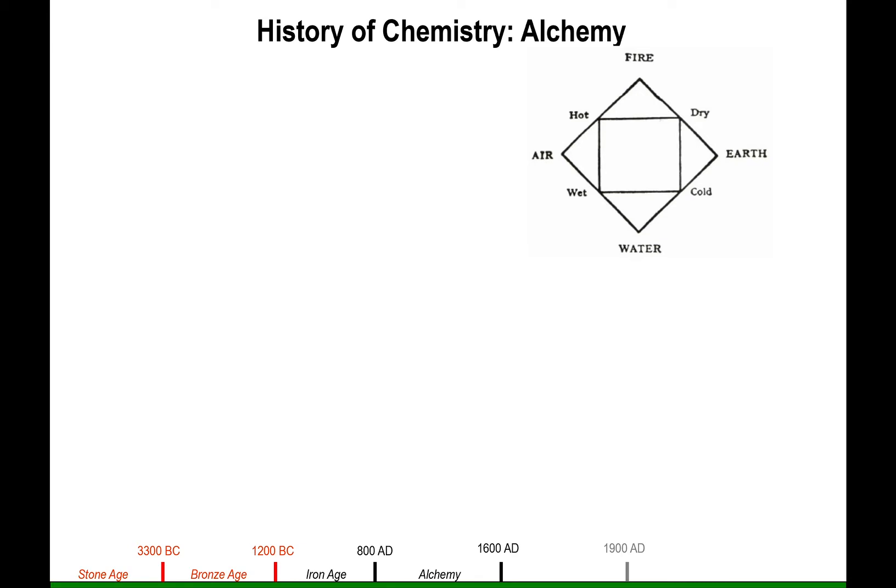Another historical aspect of chemistry that happens during the Iron Age and kind of in between the Iron Age and modern age is alchemy. Alchemy is like the younger version of chemistry except it was not as well put together. The idea back then was that we had four main elements: air, fire, earth, and water, and there were properties associated with each one in combination with each other.